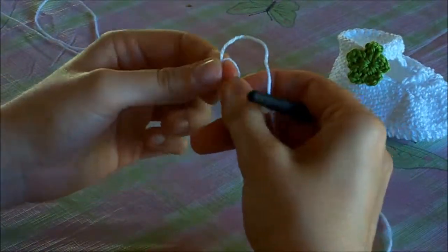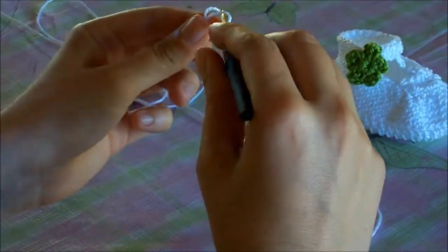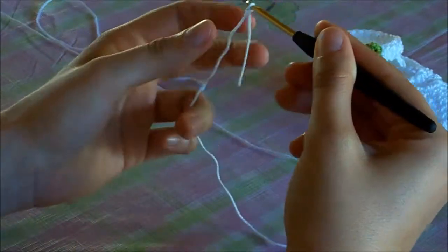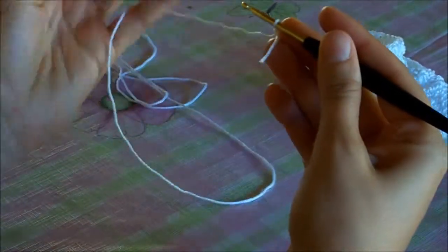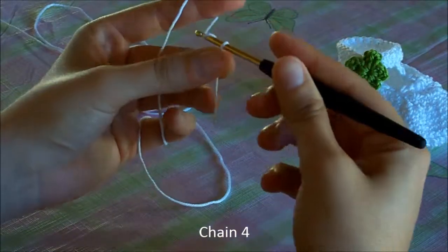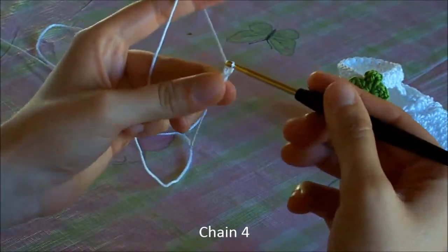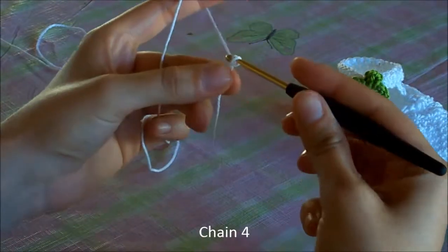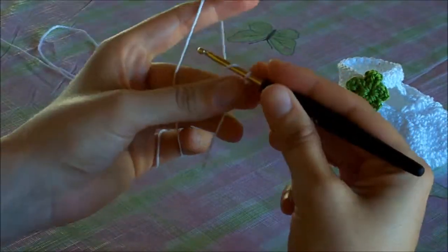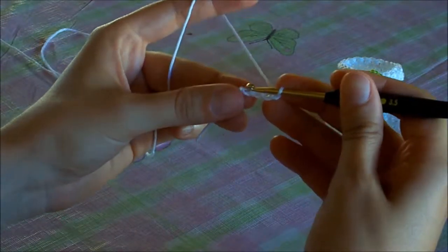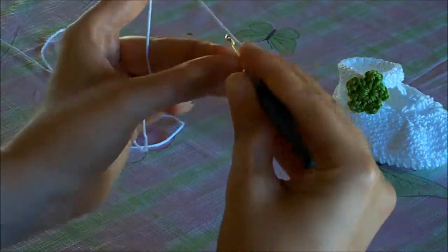We are going to start with a simple crochet knot. We start to chain 4: 1, 2, 3, 4. Now we are going to slip stitch into the beginning chain.